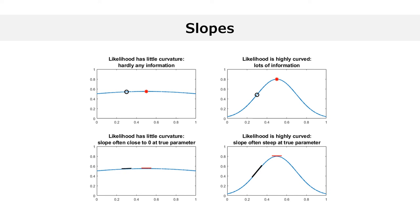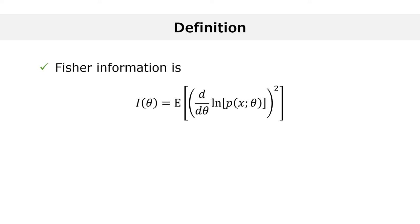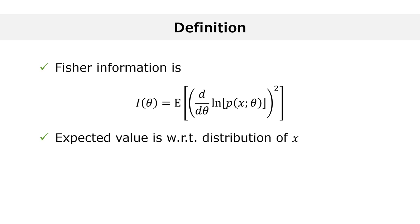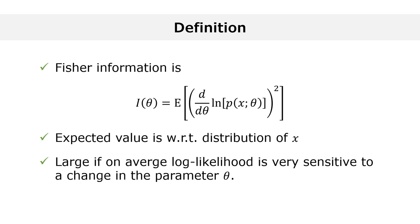This leads us to the formal definition of Fisher information. Fisher information, denoted by I of theta, is equal to the expected value of the square of the first derivative of the log-likelihood. The magnitude of the derivative of the likelihood, or equivalently of the log-likelihood, is related to the amount of information provided by the data. The expected value of the square of the derivative is a way of measuring its average magnitude, taken with respect to the distribution of x. The Fisher information is large if on average the log-likelihood is very sensitive to a change in the parameter theta — this happens when the likelihood is highly curved and the data provides a lot of information about the parameter theta.